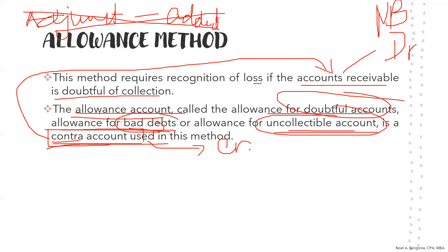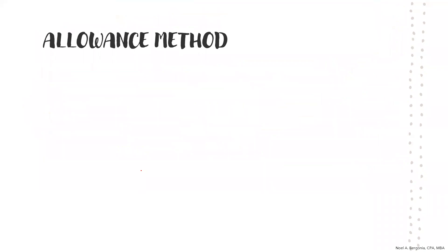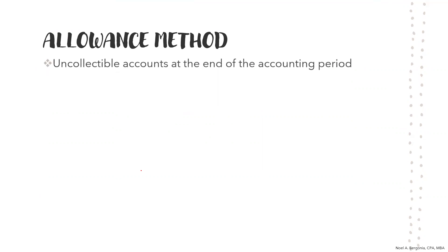We use the allowance method because it produces a better matching of our income and expenses based on the matching principle. Let's proceed to the next slide. I just want to show you the sequence of entries that will be encountered when we use the allowance method. We will focus here on the adjusting entry for uncollectible accounts at the end of the accounting period.